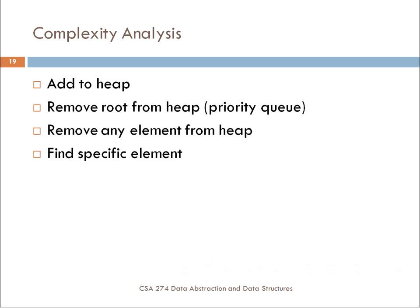Looking at the complexity analysis for any one of these operations — adding to the heap — you'll only ever do the number of operations necessary to take the last element added and perhaps move it all the way up to the root if it ends up being the greatest item. So the number of operations for adding to the heap is O(log n). The same applies to removing from the root: you take the last element, put it at the root, and heapify downwards — also O(log n). Removing any element from the heap also has that same complexity. It ends up being a fairly straightforward and efficient algorithm.